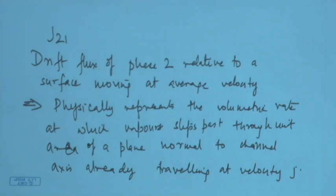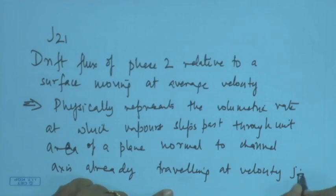What does this mean? Basically it means the volumetric rate at which vapour is passing forward in upflow, or flowing backward in downflow, through unit area of a plane perpendicular to the cross section — and this volumetric rate is with respect to the velocity of the channel axis. This channel axis is also travelling with an average velocity, which is nothing but jtp, the two-phase volumetric flux equal to j1 plus j2. Relative to this jtp, we measure the volumetric rate at which the vapour slips past.